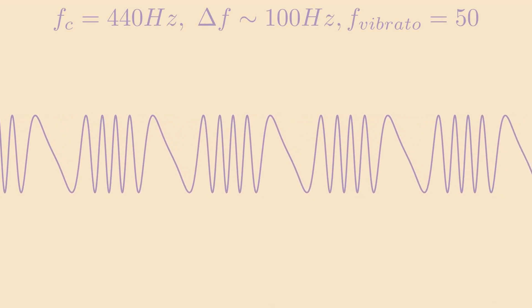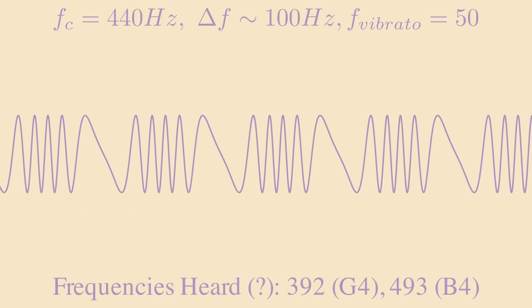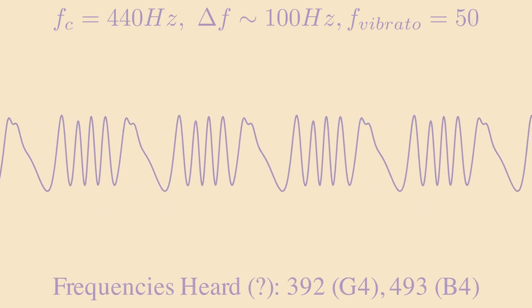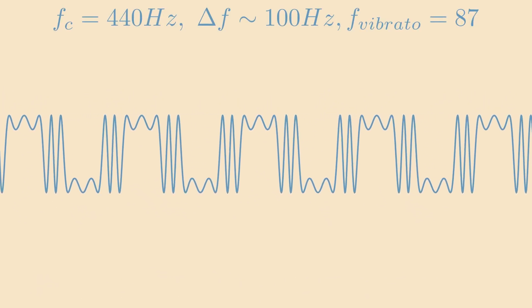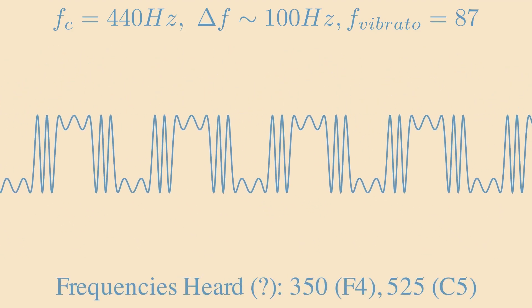We'll start with vibrato frequency of 50. Those of you with perfect pitch might hear a G and a B. Here's another note with vibrato frequency 87. Now you might hear an F and a C.